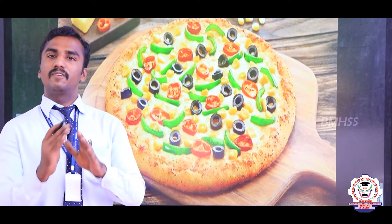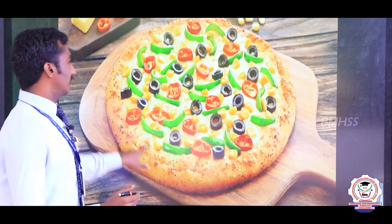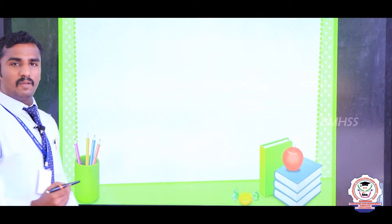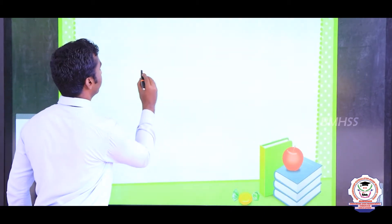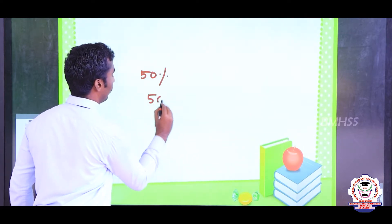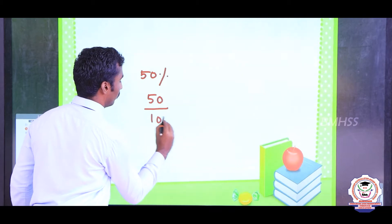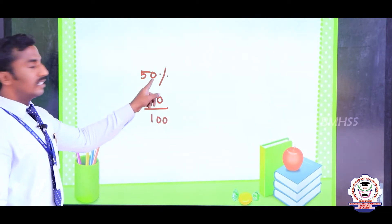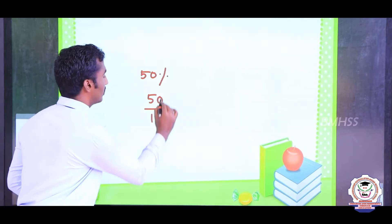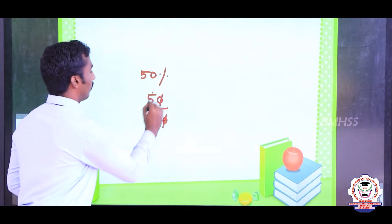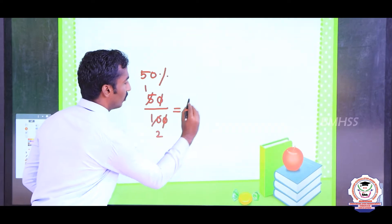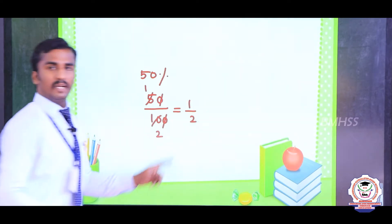50 percent means 50 divided by 100. This is the percentage form and this is the fraction form. 50 divided by 100 — cancelling zeros — this is equal to 1 by 2. 1 by 2 is a fraction.